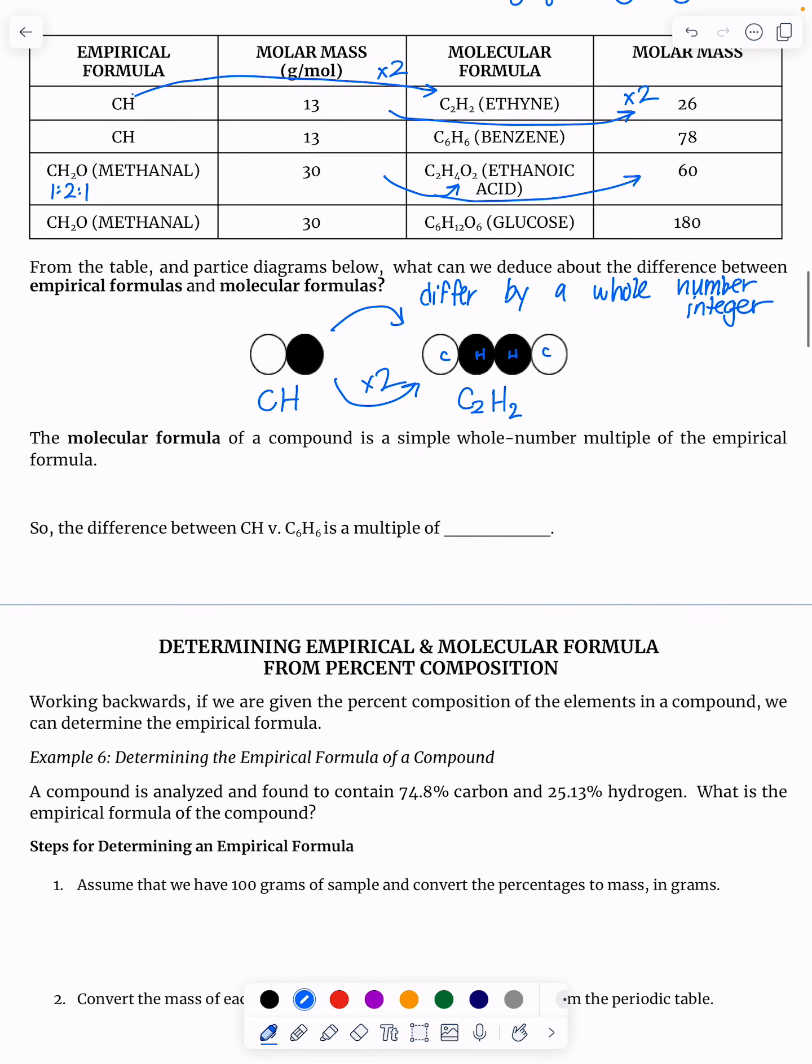The molecular formula of a compound is a simple whole number multiple of the empirical formula. So the difference between CH and C6H6 is a multiple of, I got to multiply by, six.